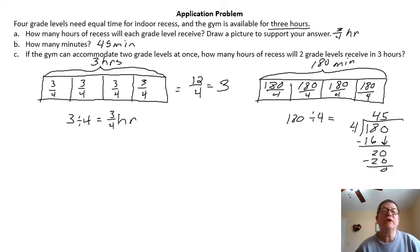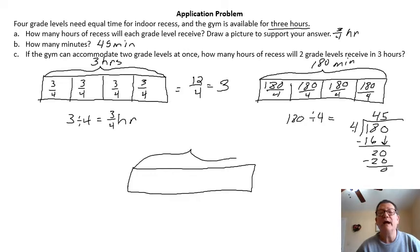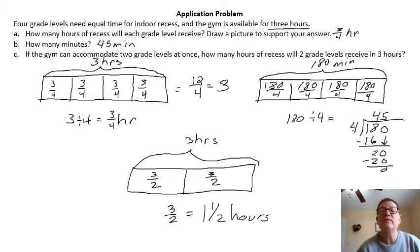The last one says if the gym can accommodate two grade levels at once, how many hours of recess will two grade levels receive in three hours? If I come back to here again with a tape diagram, we're back to hours, so they had three hours. And instead of four, two grade levels at once. So that means I'll be able to split it into two. So each one will be three-halves, which equals one and a half hours.